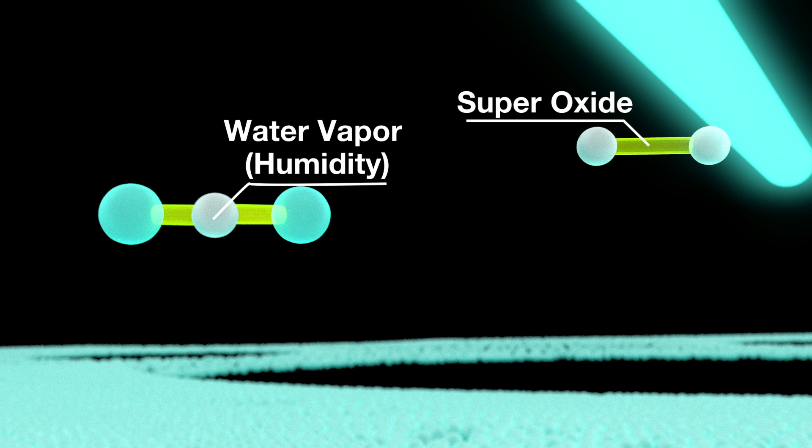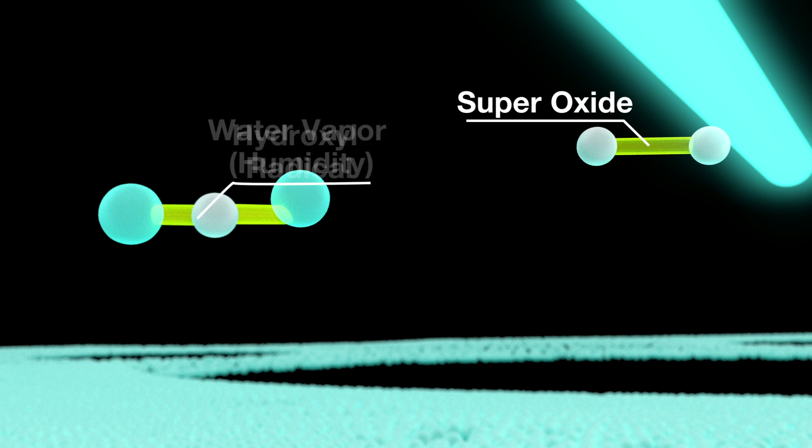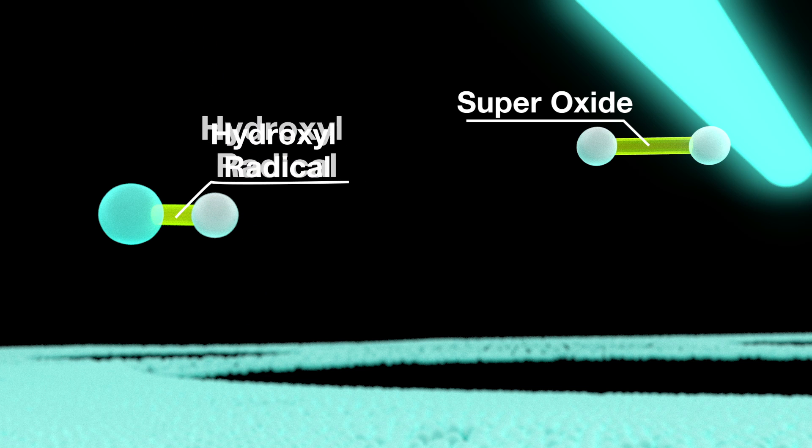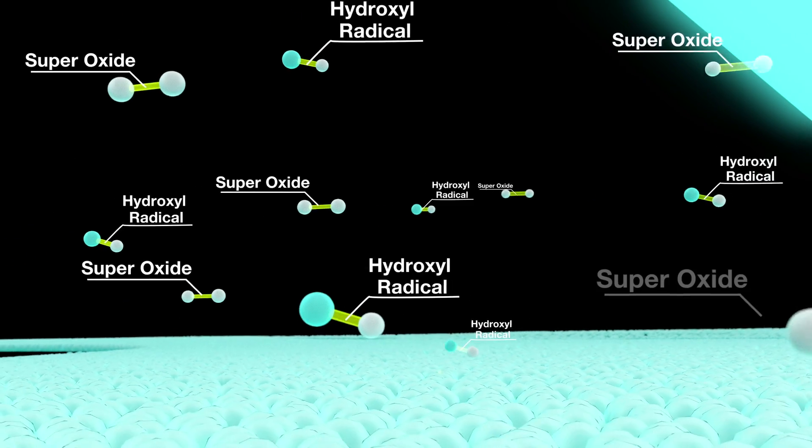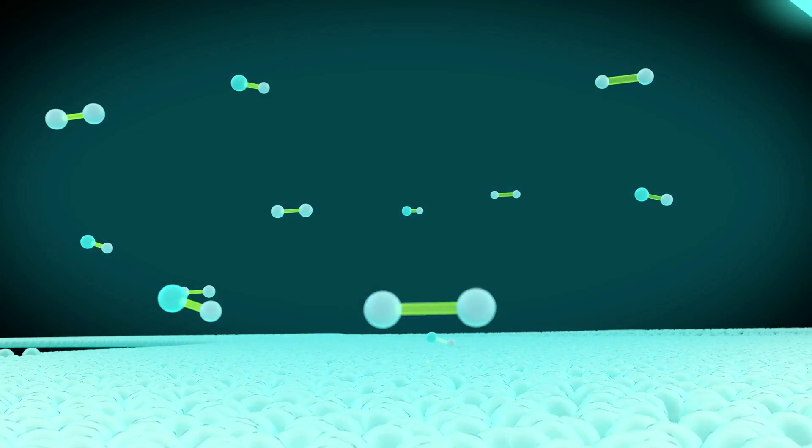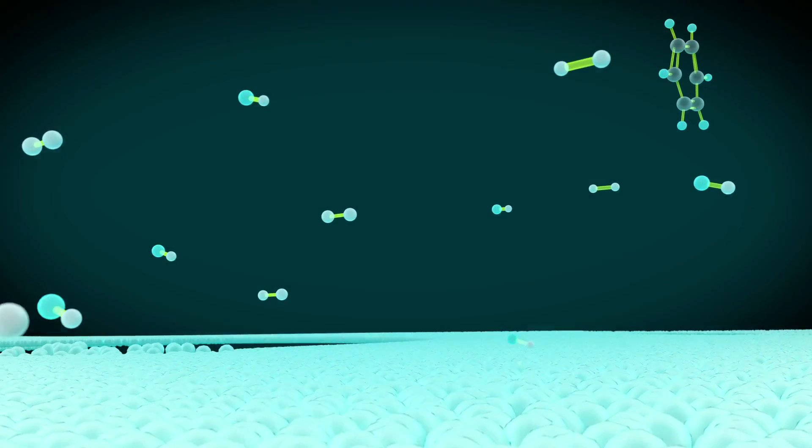The titanium dioxide then collects replacement electrons from moisture in the air to become charged particles known as hydroxyl radicals. Together with the super oxides, a powerful photocatalytic oxidation or PCO field is created.